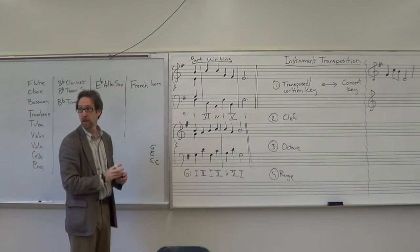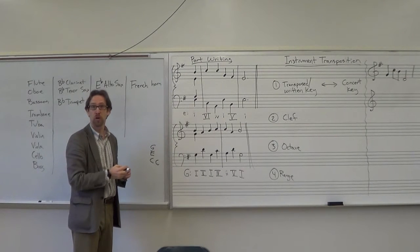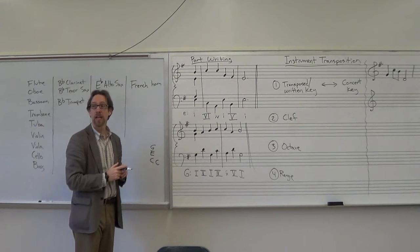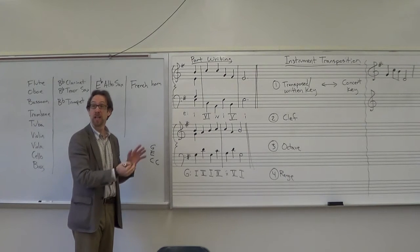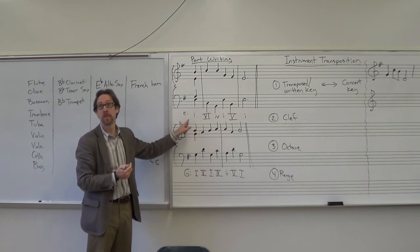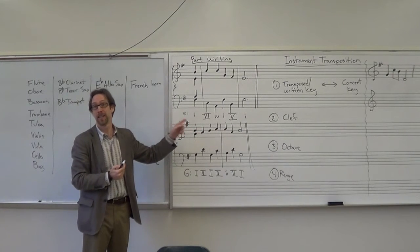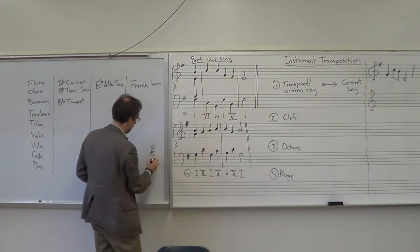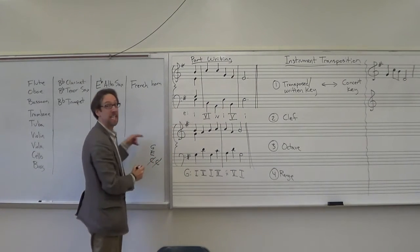We double the C. For all root position triads unless it is the six chord in a deceptive resolution, which means a six chord preceded by five. This is a six chord preceded by one, therefore it is not a deceptive resolution. So we need two C's, E, G. We have one C, we have another C. We need E and G.